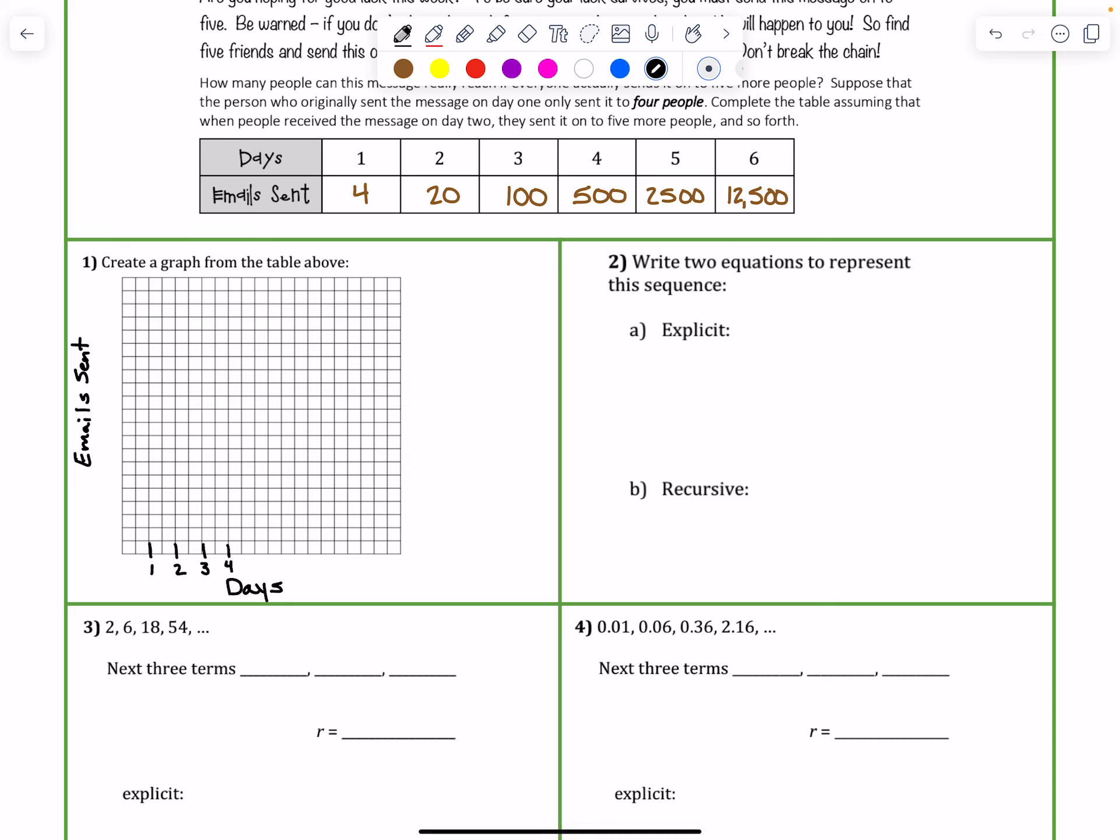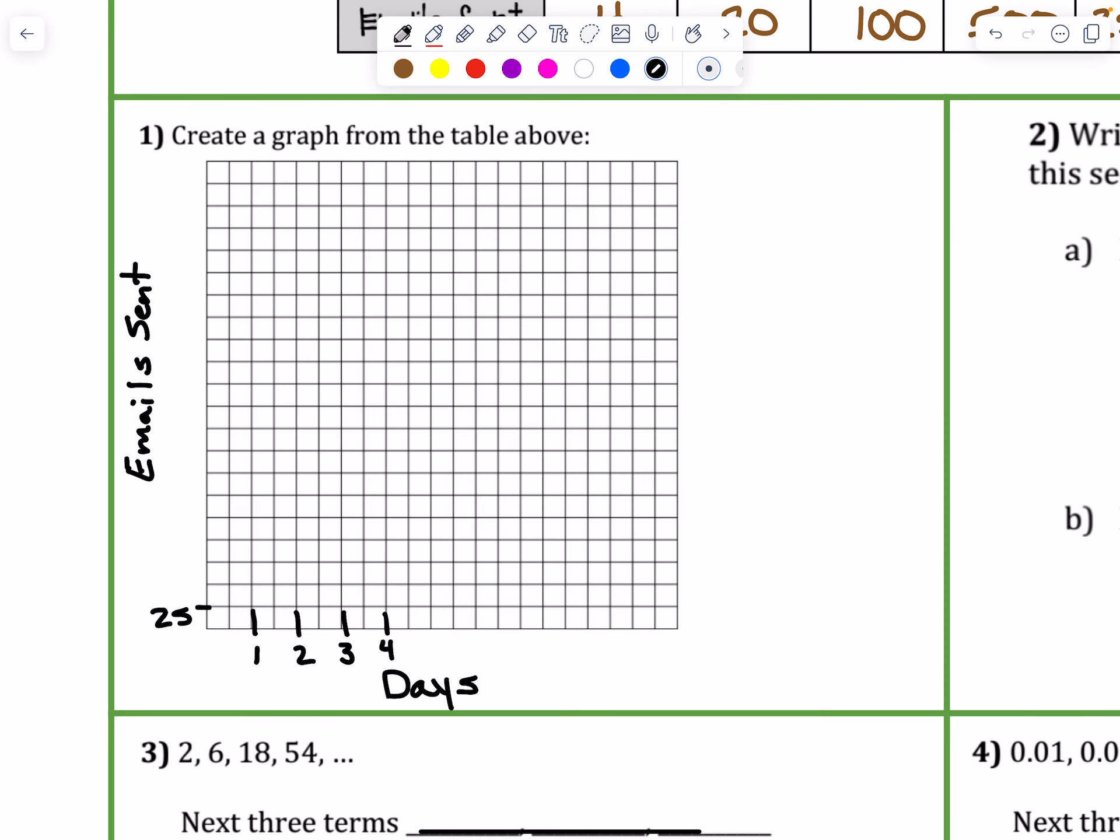And then every box on the email, like the y-axis, we're going to put is equal to 25 emails. But it helps to not label every single box because it just gets really crowded. So let's say 50, 75, and put 100, and then that will be 25, 50, 75, 200, and then 25, 50, 75, 300, and then 25, 50, 75, 400, and then 25, 50, 75, 500.